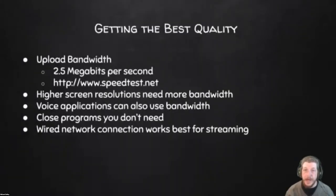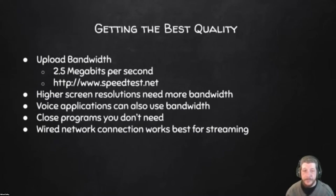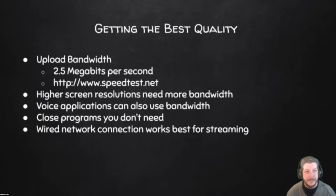Moving on to quality — how do you get the best quality out of your stream or recording? For streaming, your upload bandwidth is extremely important. We usually think in terms of download speed, which is data coming in to us, but upload speed is data going out. Unfortunately, ISPs tend to only advertise download speed, making it hard to find your actual upload speed. You can use something like speedtest.net to get a good feel for your maximum upload speed. By default, OBS starts at 2500 kilobits per second — that's 2.5 megabits per second — and for a lot of use cases, that's a good starting point.